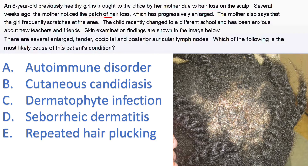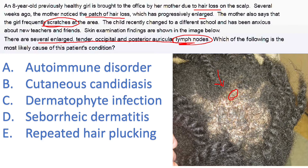Note the demographic — this is an African-American girl. Several weeks ago the mother noticed a patch of hair loss which has progressively enlarged, and the girl frequently scratches at the area — so hair loss with itching. There are several enlarged tender occipital and post-auricular lymph nodes, which is a giveaway that it's an infectious cause. This looks like tinea capitis, or scalp ringworm, which causes hair loss with scaling and itching.